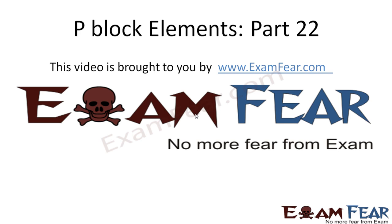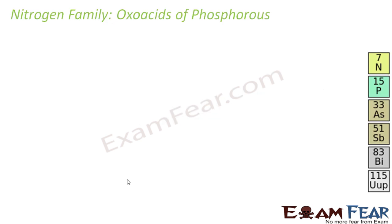Hello friends, this video on P-block elements part 22 is brought to you by examfier.com — no more fear from exams. So oxo acids of phosphorus are acids which have both oxygen and hydrogen.